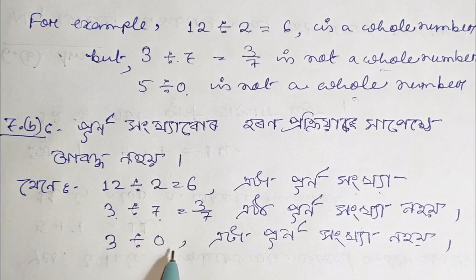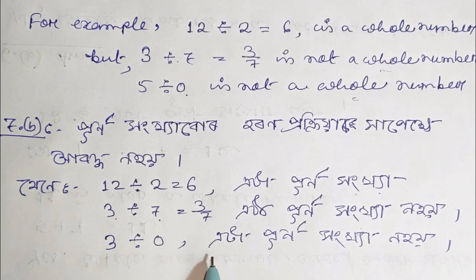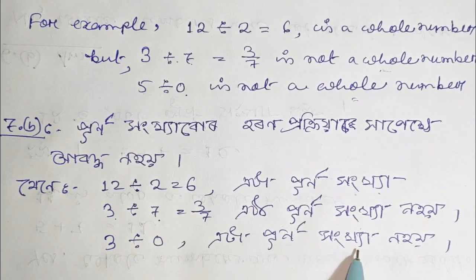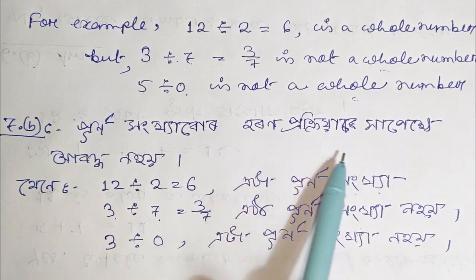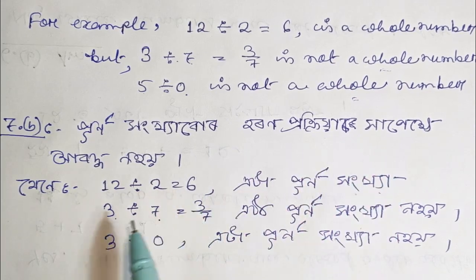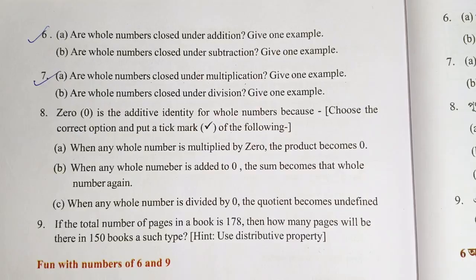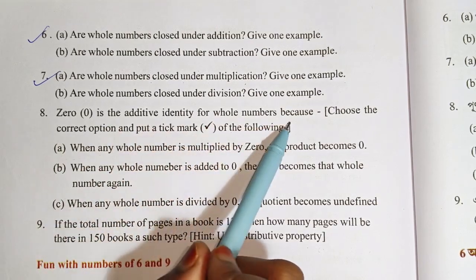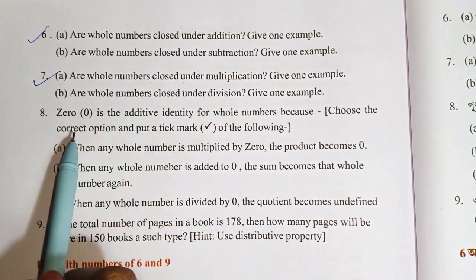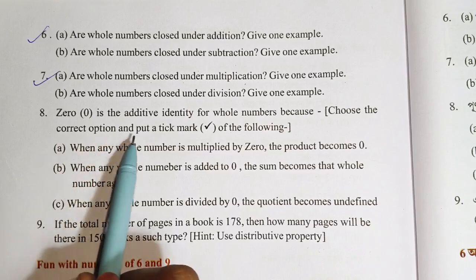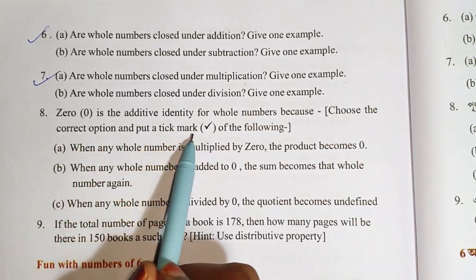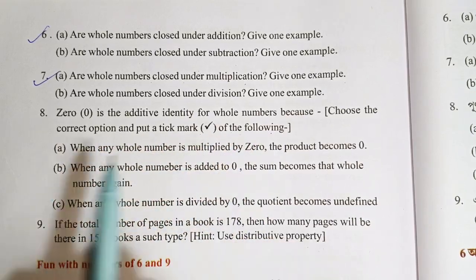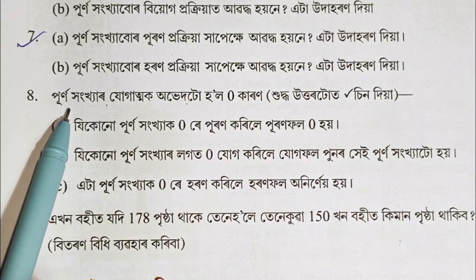Question number 8: Zero is the additive identity for whole numbers. Choose the correct option and put a tick mark.